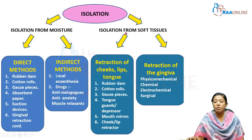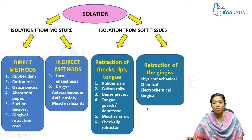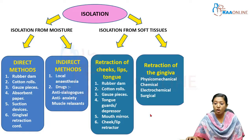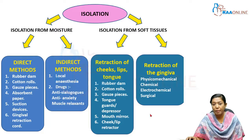Under isolation of soft tissues, we have retraction of the lips, cheek, and tongue. Devices used include rubber dam, cotton rolls, gauze pieces, tongue guards, tongue depressor, mouth mirror, and lip and cheek retractors.